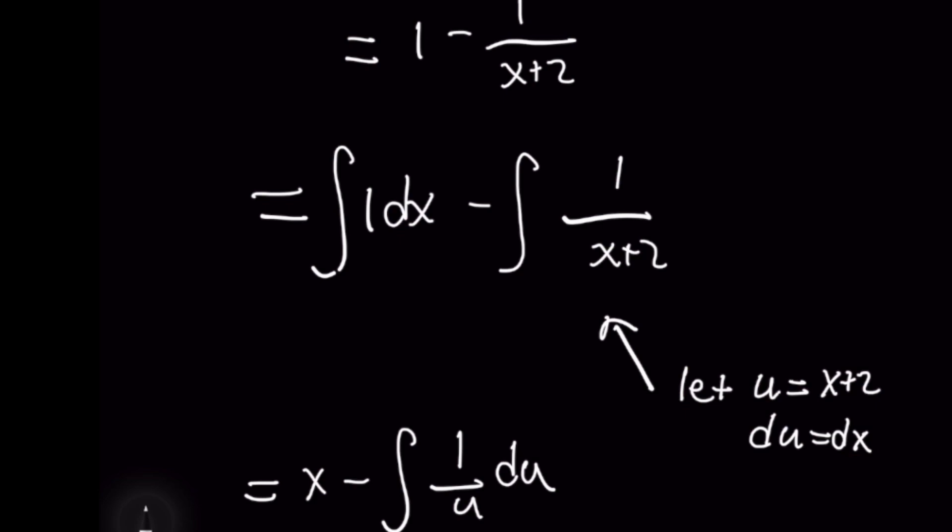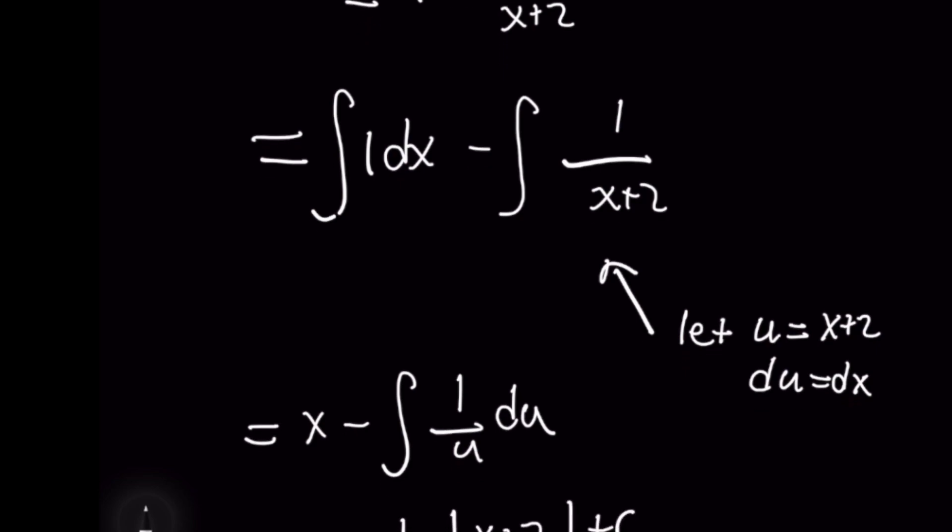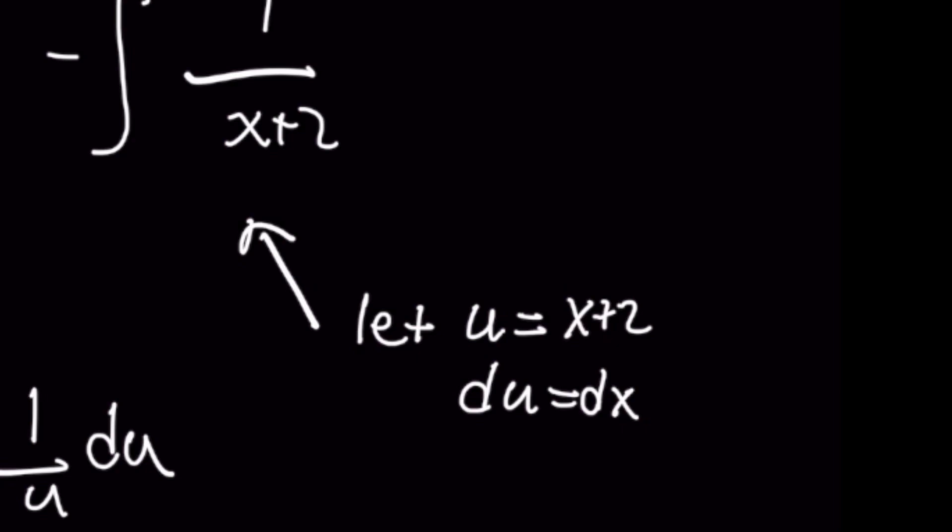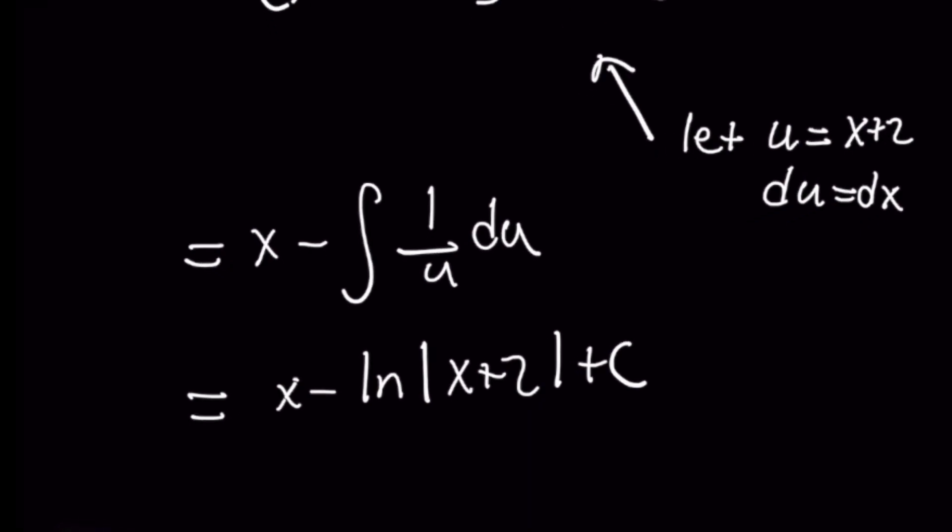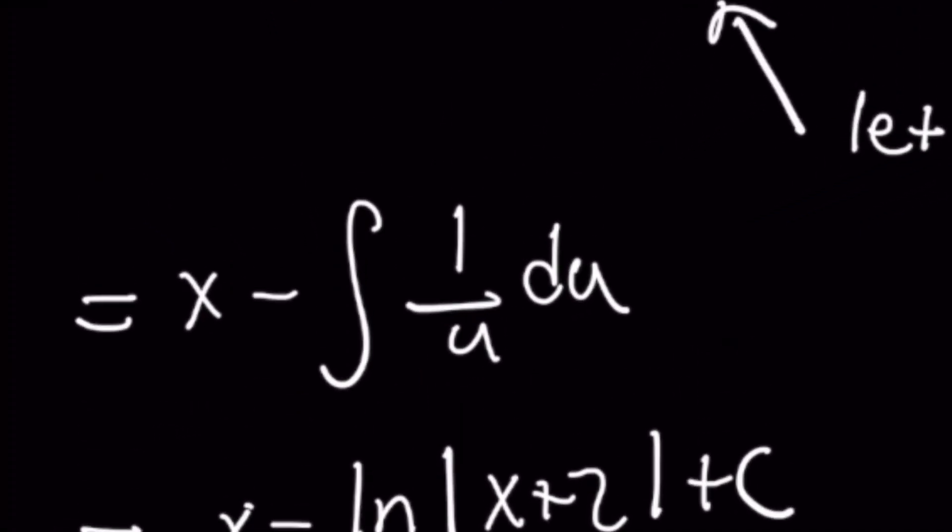So letting u equal x plus 2, taking the derivative with respect to each variable on the left and right side here would give you du equals dx. And so rewriting the difference of these two integrals would give you the integral of 1 dx which is simply x minus an integral of 1 over u du because we just used u substitution.